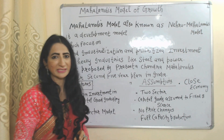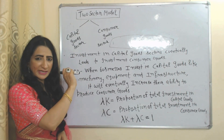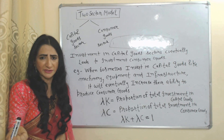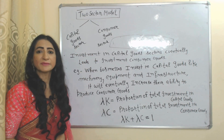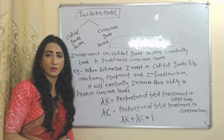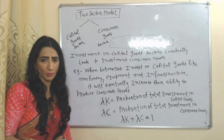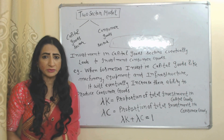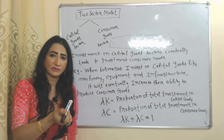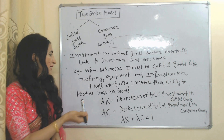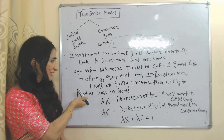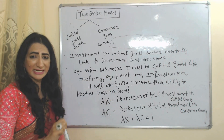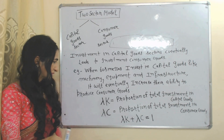This is a two-sector model: the capital goods sector and the consumer goods sector. The capital goods sector involves businesses investing in machinery, buildings, and infrastructure. The consumer goods sector refers to goods directly used by households — for example, cloth, food, and automobiles. This model mainly focuses on investment in capital goods, because according to this model, investment in capital goods eventually leads to investment in consumer goods.